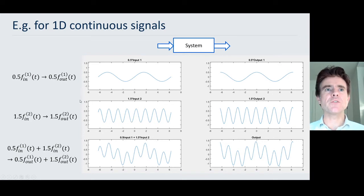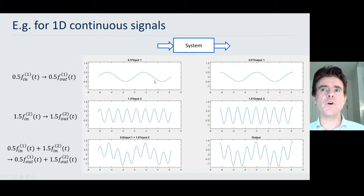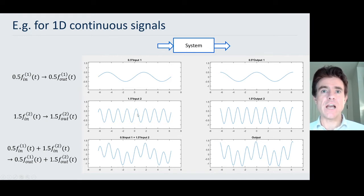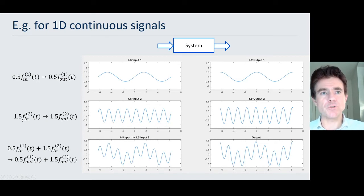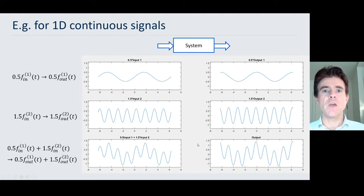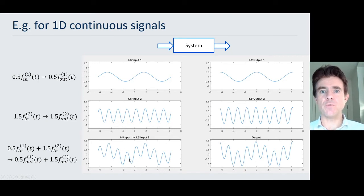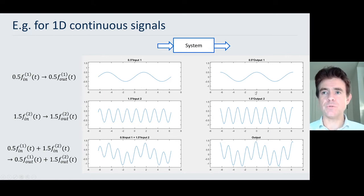With a linear system, if we scale that input function by a value of 0.5, then the output would be scaled by 0.5. So 0.5 times input 1 gives 0.5 of output 1. If the second input function is scaled by 1.5, then the output function would also be scaled by 1.5. And then by linearity, if we add together 0.5 times input 1 plus 1.5 times input 2 to give this overall input function, then the output would just be the sum of those two scaled outputs.